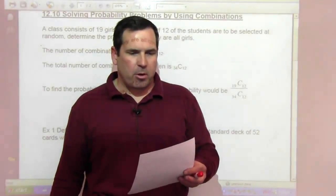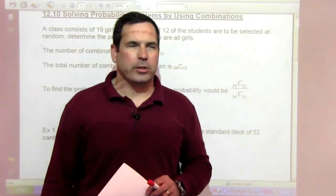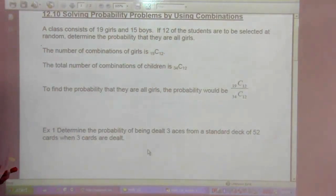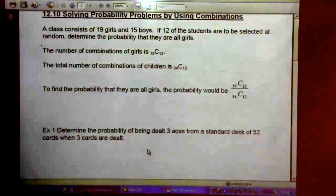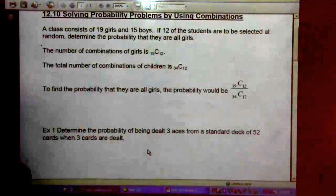Hello and welcome to 12.10, Solving Probability Problems by Using Combinations. A class consists of 19 girls and 15 boys. If 12 of the students are to be selected at random, determine the probability that they are all girls.